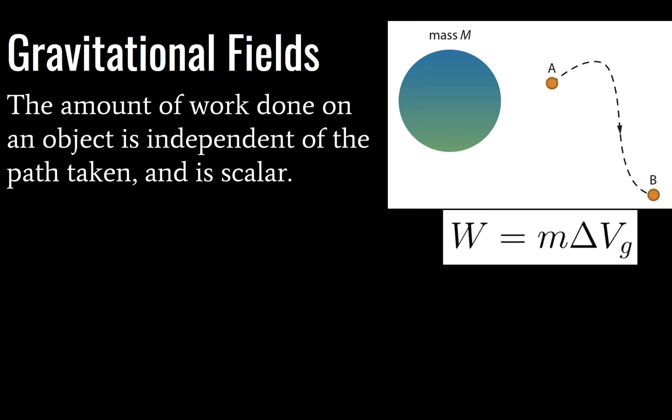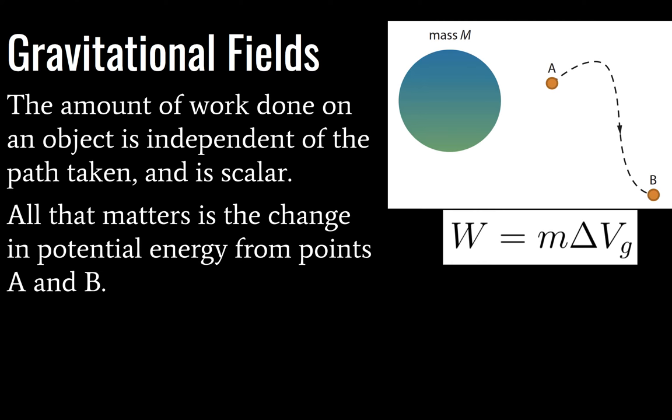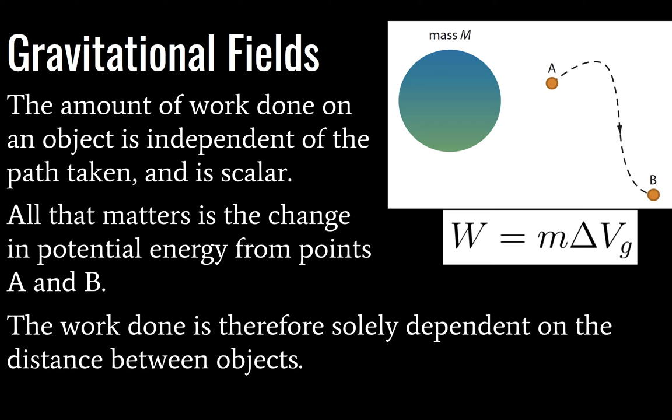This diagram shows that the amount of work done on an object is independent of the path taken. It is also a scalar quantity, meaning there's no direction given for the amount of work done. All that we're considering is the change in potential energy from points A and B, and that change is solely dependent on the distance between objects, as we've seen in the formula involving radius on a previous slide.